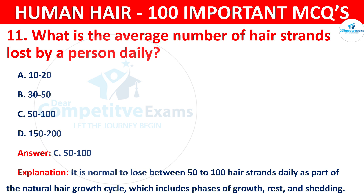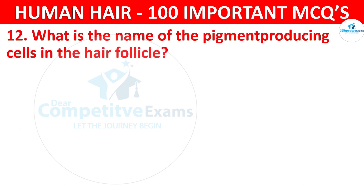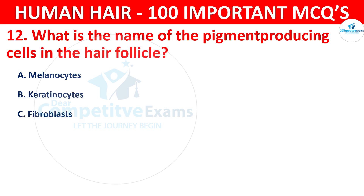Question number 12. What is the name of the pigment-producing cells in the hair follicle? The options are melanocytes, keratinocytes, fibroblasts, or adipocytes.